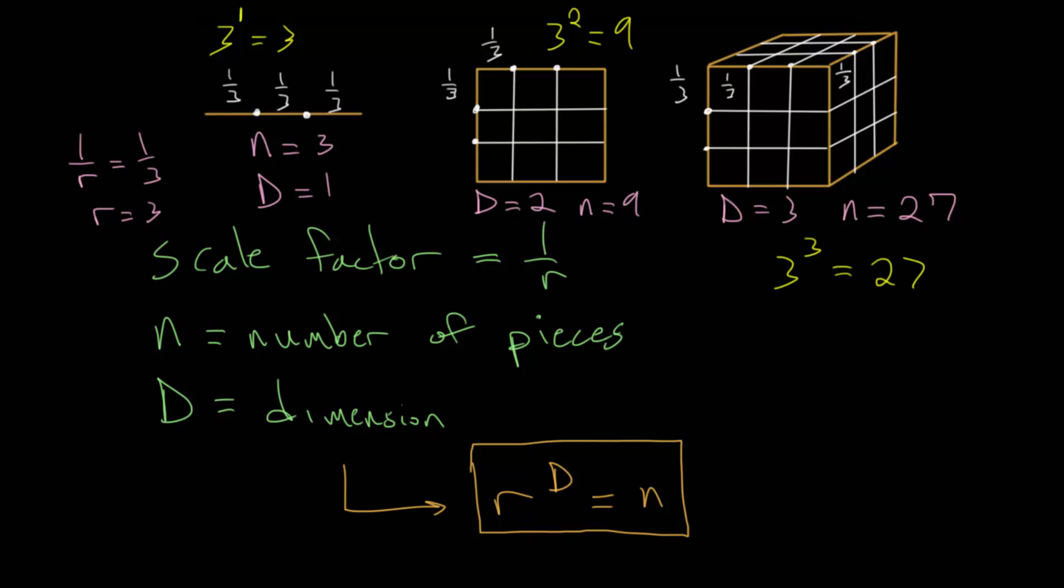In the previous video, we looked at a relationship between dividing up the simple shapes - the line, the square, and the cube - into smaller shapes, and found a way to relate the factor that we divide the shapes up into, the number of pieces we end up with, and the dimension of each of those objects.